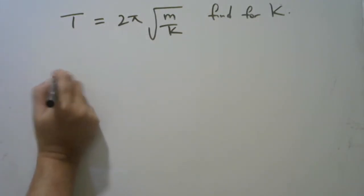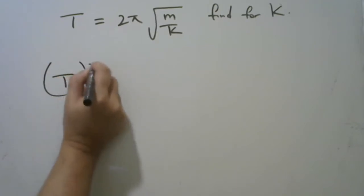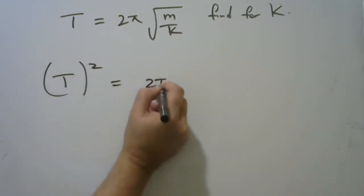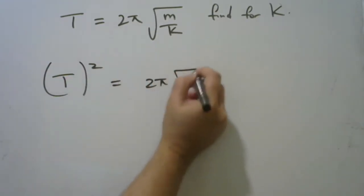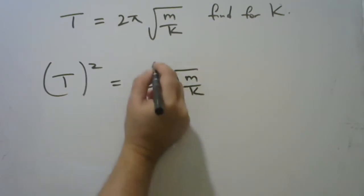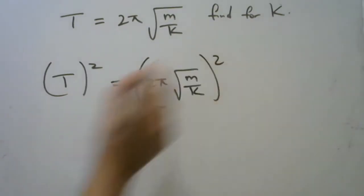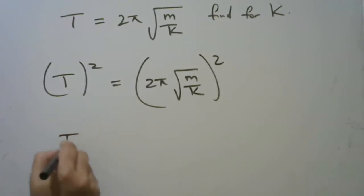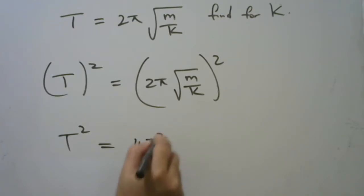So I'm going to get T all squared is equal to 2π times the square root of m upon k, everything squared. So here, this gives me T squared is equal to 4π squared m upon k, all right?